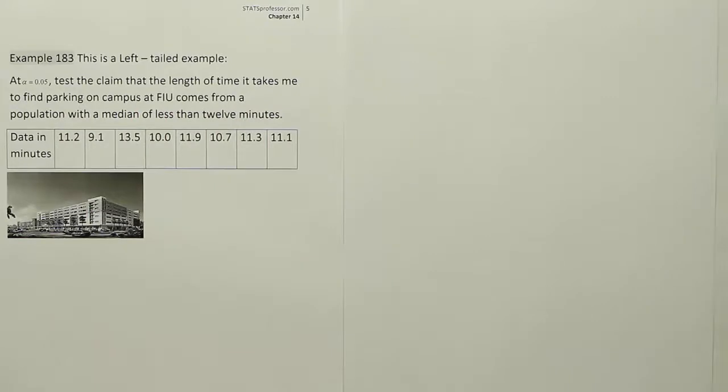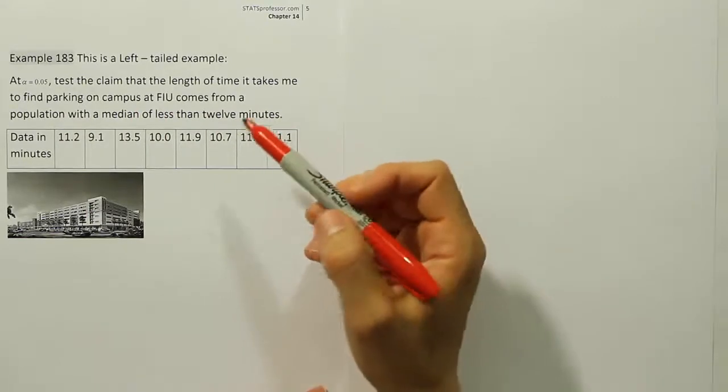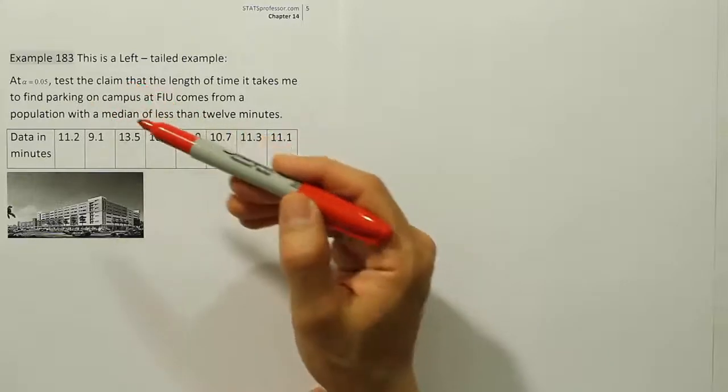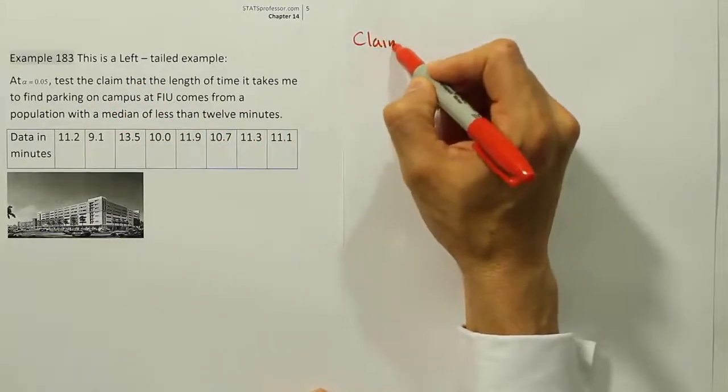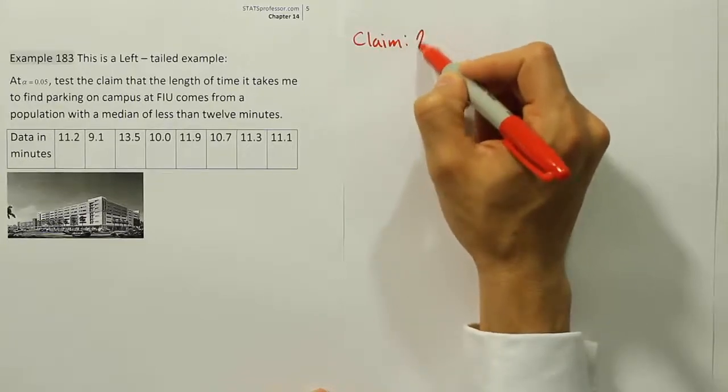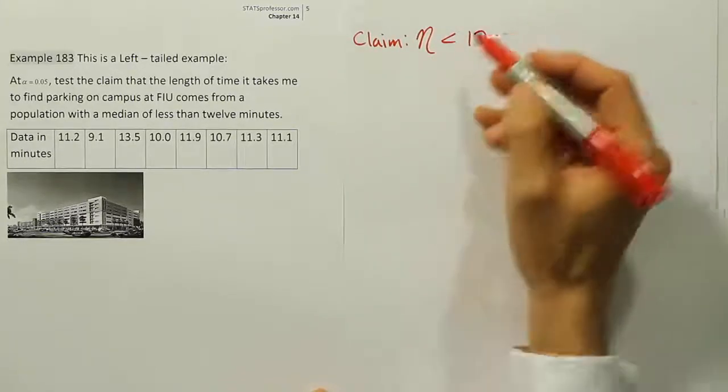What I'm doing here is looking at a problem that's going to involve the sign test, and it's a hypothesis test because it says test the claim, and it says that the median is less than 12. So our claim is that the median eta is less than 12 minutes.